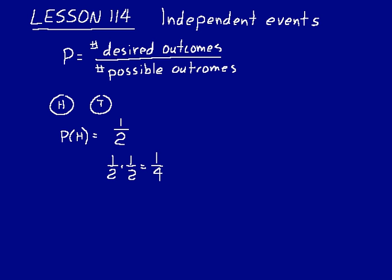We call those events independent events because one was not affected by the other one. Getting heads the first time does not mean that we will get heads the second time. It's not affected by that first flip. And we call those independent events. The probability of independent events occurring, we multiply those probabilities together.